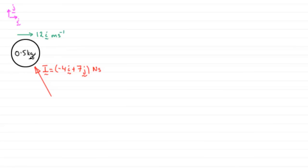Essentially we've got this ball of mass 0.5 kilograms moving with a velocity of 12i meters per second. I've set up unit vectors i horizontally and j upwards. It's not drawn to scale, but essentially we've got the ball moving with velocity 12i meters per second to the right here. It's struck by a bat and the impulse received by the ball is minus 4i plus 7j newton seconds.